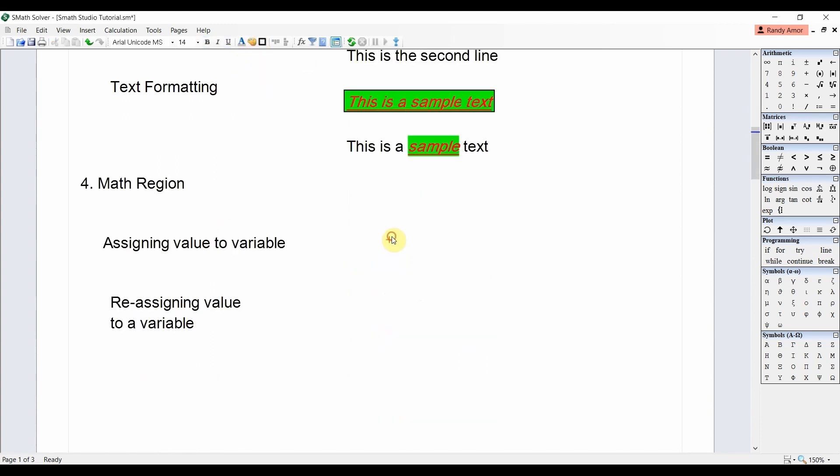In the math region, you may assign value to a variable by typing the variable, then press the equals key, and then enter the value you wish to assign to the variable. For example, if you wish to assign the value 5 to the variable x, simply type x equals 5, then press Enter. When you press x followed by equals sign, Smath Studio will give the value you assigned to it, which is 5.